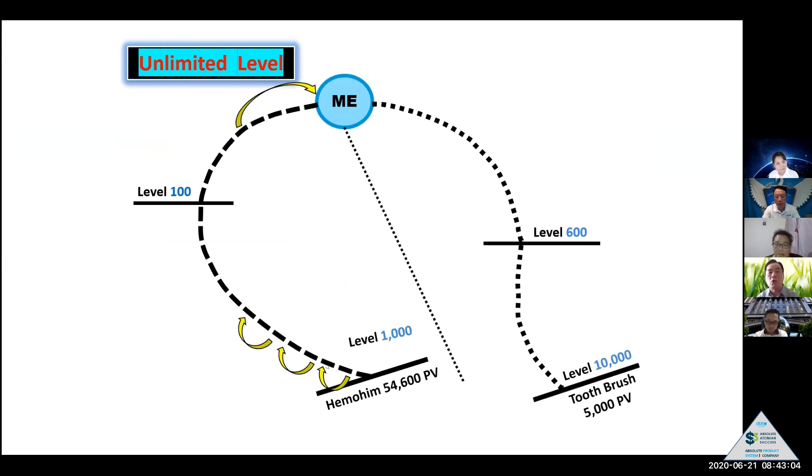But Atomy, only two legs and hundred down level left leg. So one of your members purchase Hemohim one box. How much point value? 54,600.